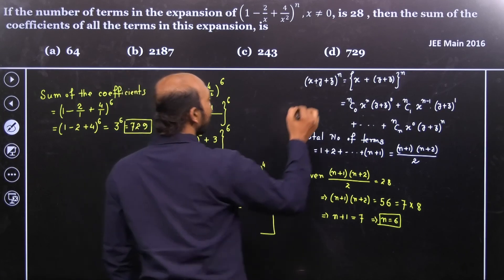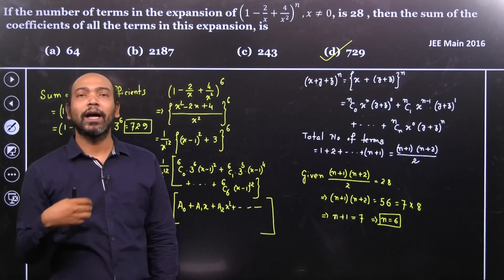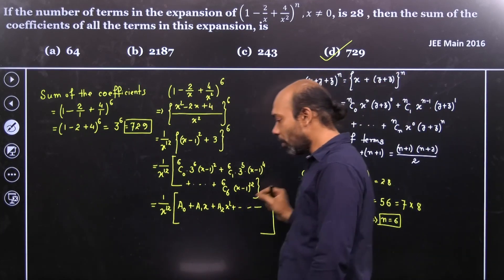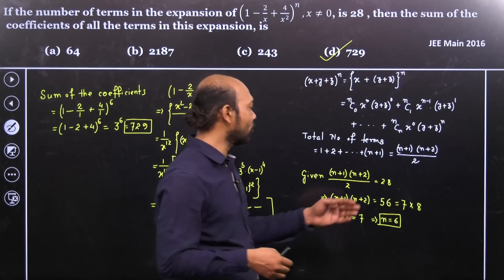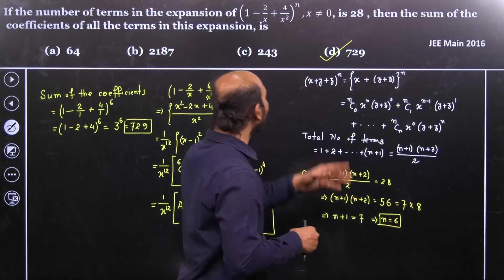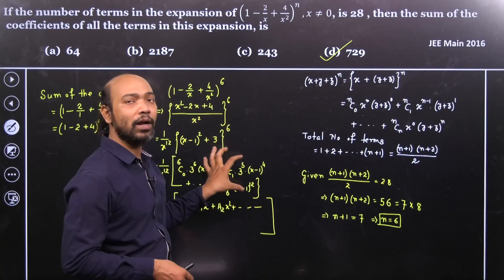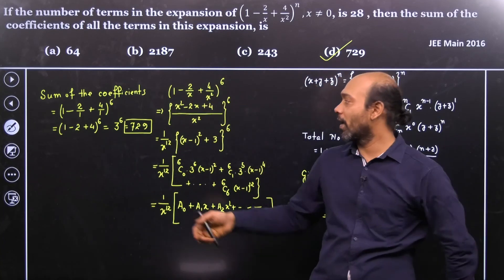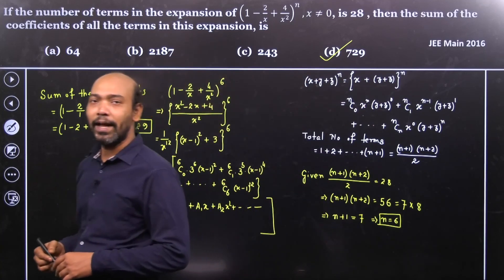That gives us 3 to the power 6, which equals 729. So the right answer for this problem is 729. To summarize: we just need to remember that the number of terms for a trinomial x plus y plus z to the power n is n plus 1 times n plus 2 divided by 2, which gives us n equals 6. Then substituting x equals 1, our final answer is 3 to the power 6. It's a straightforward problem.